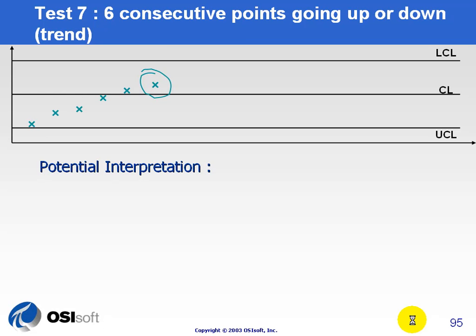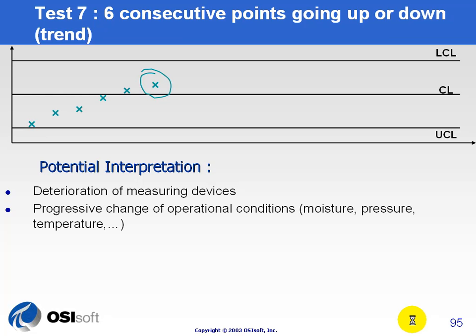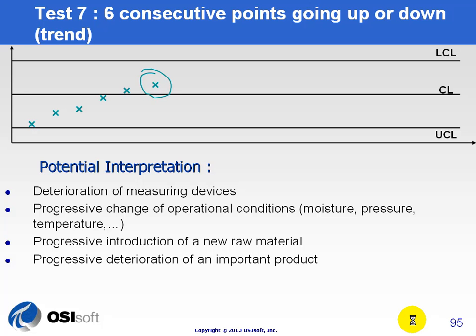Six consecutive points going up or down — also known as trend — the potential interpretation is some kind of equipment that's gradually going out of configuration or gradually deteriorating in performance. If your operating conditions are changing over time, you'll see these kinds of things trend. You're introducing new raw material, you've got product that's deteriorating — catalysts or whatnot — or simply people that are no longer running the process as efficiently as they normally are. You'll find books and books on this. We've been recommending the Western Electric SQC Handbook, which was published in the 50s — now it's the Lucent Handbook, and before that it was the AT&T SQC Handbook. That's really an excellent resource on all these SQC alarm types.